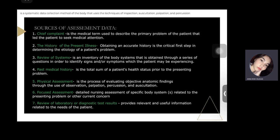Then we go into the history of present illness — obtaining an accurate history is the critical first step in determining the etiology of the patient's problem. This is what happened that brought the patient to the hospital and the reason why they are seeking care or medical attention. Number three would be a review of systems — it is an inventory of the body systems obtained through a series of questions to identify signs and symptoms the patient may be experiencing, such as rashes or arthritis.